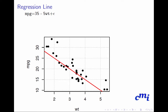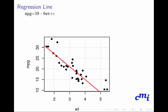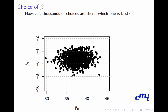How do we decide the weights? If I choose β₀ = 35 and β₁ = −5 I get one line, whereas if I choose β₀ = 39 and β₁ = −6 I get another line. Which line should I choose? There could be infinitely many choices for β₀ and β₁, so I can fit infinitely many possible lines — but which line should I choose?